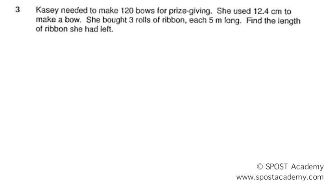Casey needed to make 120 bows for prize giving. She used 12.4 cm to make a bow. She bought 3 rolls of ribbon each 5 meters long. Find the length of ribbon she had left.